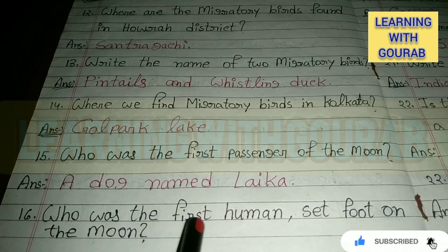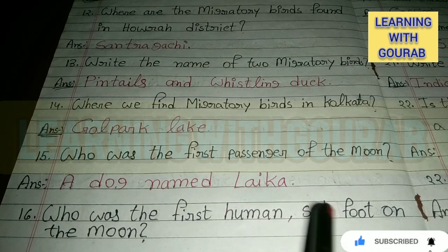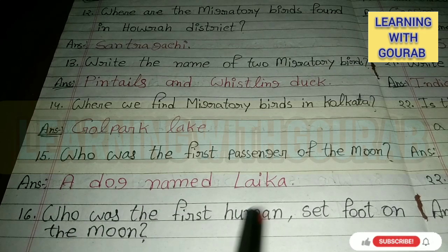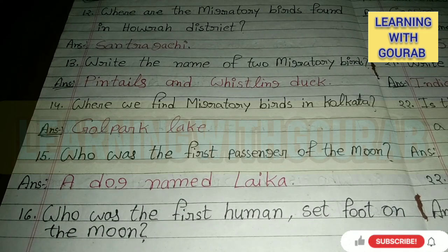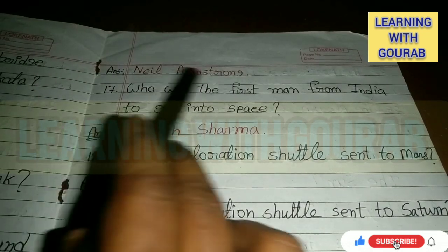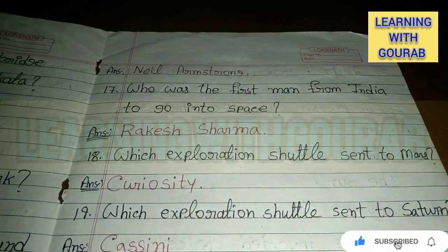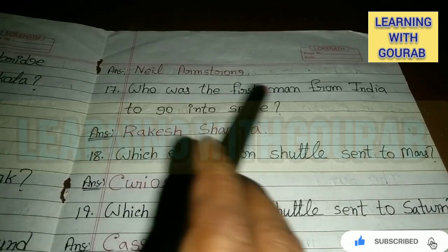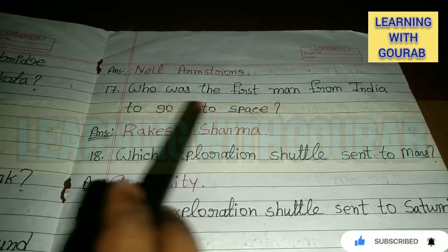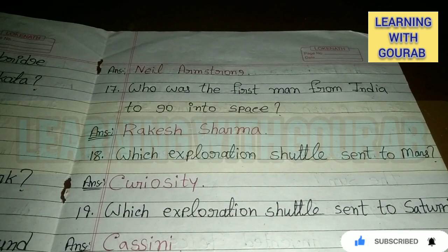Who was the first human to set foot on the moon? Answer: Neil Armstrong. Who was the first man from India to go into space? Answer: Rakesh Sharma.